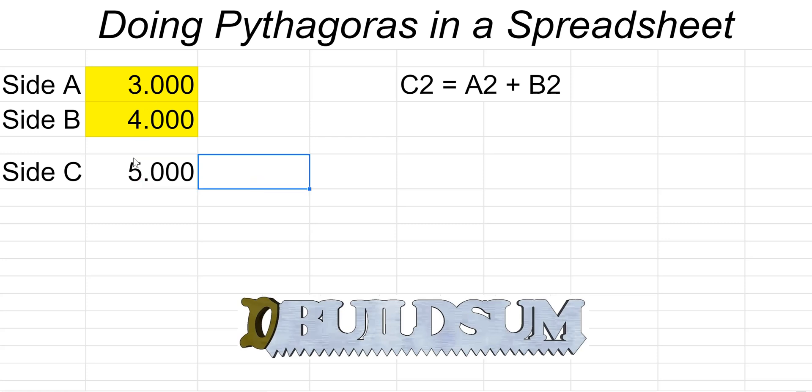Now we know we've got the right answer there, we can just change our figures. Another one that I know is if we do 1 there and 1 there we should get 1.414. There we go, we've used a spreadsheet to do Pythagoras and save us a lot of hassle in that way.